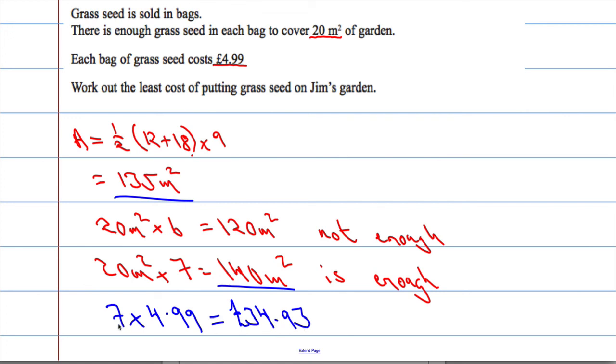Just to recap what I did here in my head, I did seven times five pounds and that's £35. Now for each bag is going to be a penny less, so seven bags it's going to be 7p. Let's take away £0.07, and that gives us our answer.